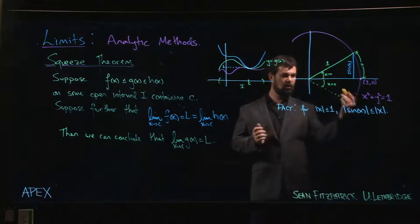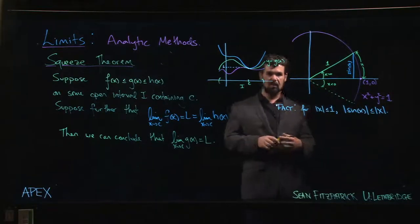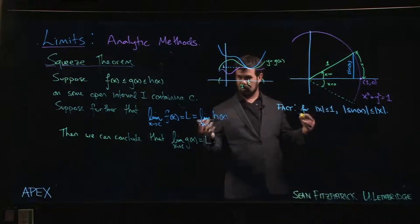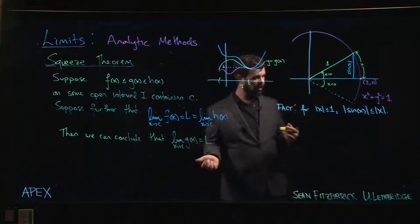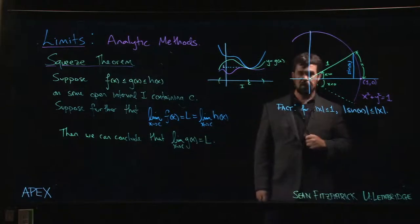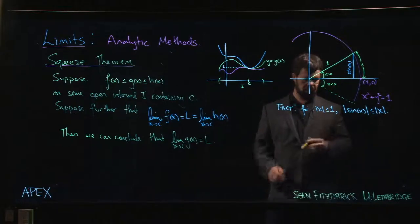In the fourth quadrant, x is negative, sine x is negative. You've got to play around a little bit with signs to make sure that everything fits into place, but you can get yourself to this point.